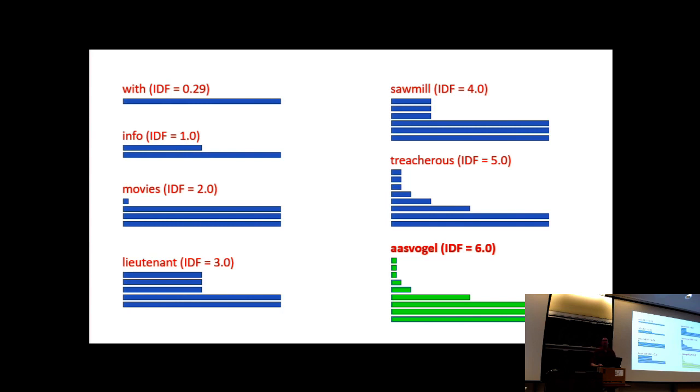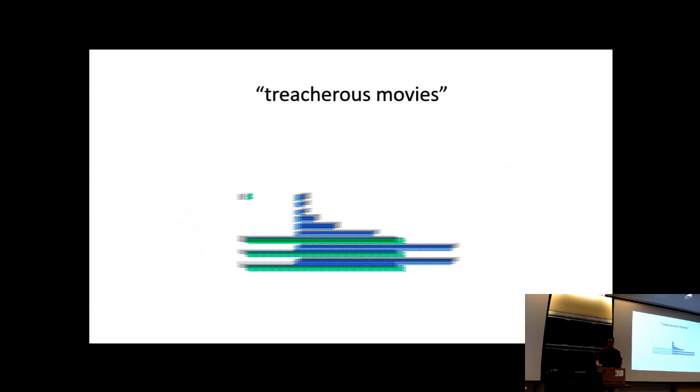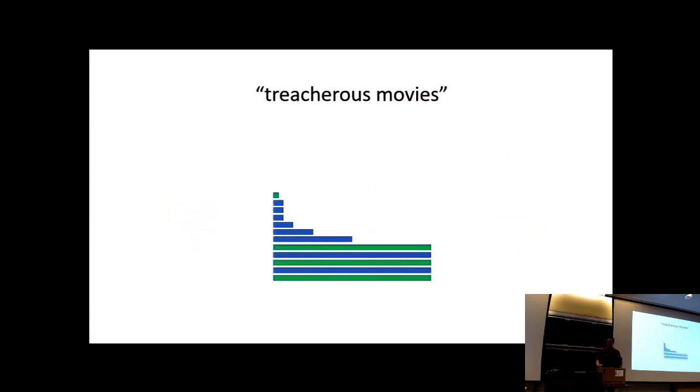Let's try a simple query. Suppose we're looking for treacherous movies. BitFunnel maintains a mapping from each term to its treatment. The treatment gives the number of hashes at each rank and this gives us the rows which we isolate, interleave, and then intersect. This slide gets at the essence of why BitFunnel is fast.